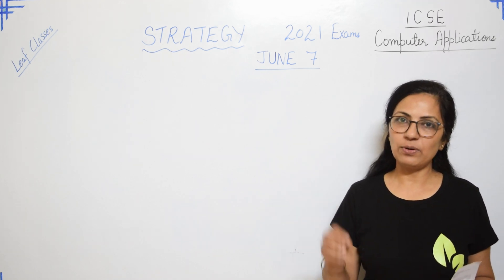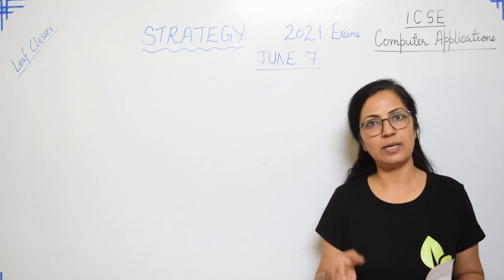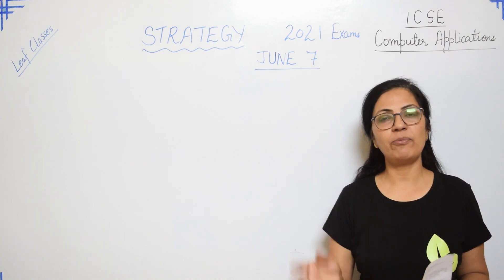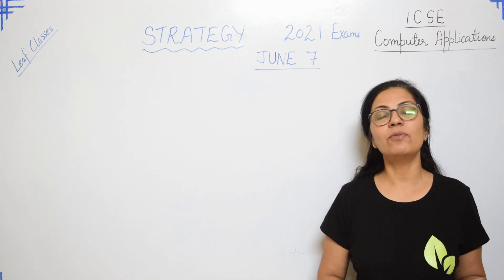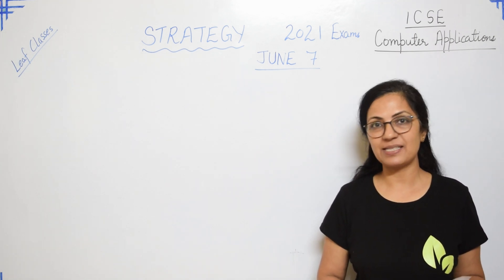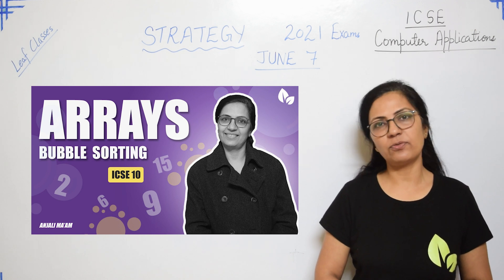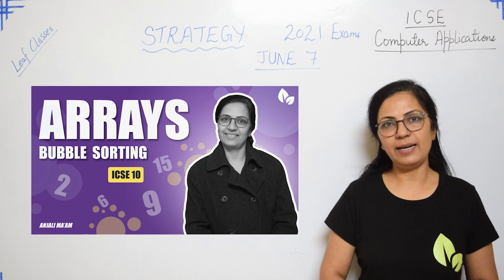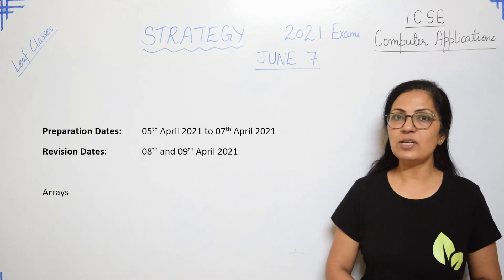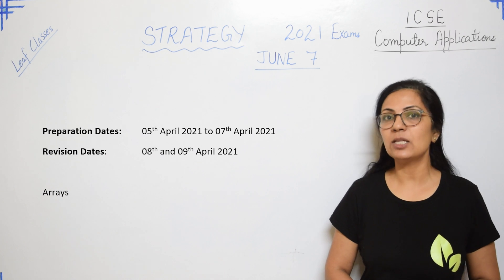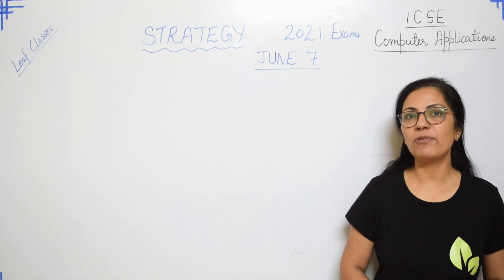In this video I am not telling you to give one hour or half an hour or two hours to the subject — it is totally up to you. How much you have prepared, accordingly you have to plan and give time to all these topics. But make sure that within the given dates you prepare these topics nicely. The sixth topic as per your syllabus is Arrays. Much has already been reduced from this topic, so it is not very lengthy — I have kept three days: 5th, 6th, and 7th of April for preparation, and 8th and 9th of April for revision.